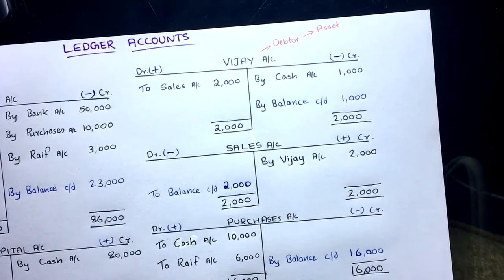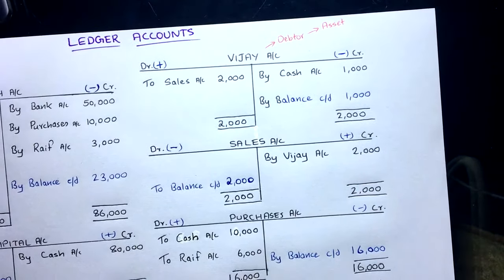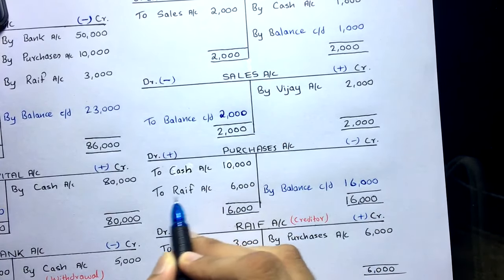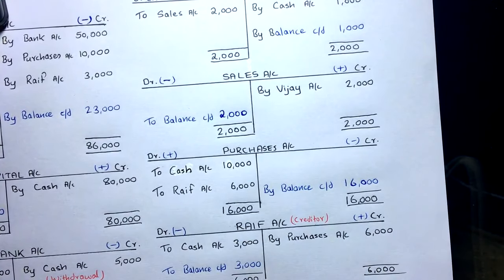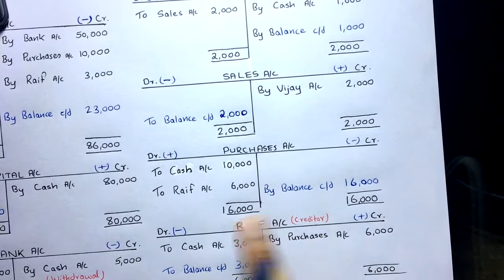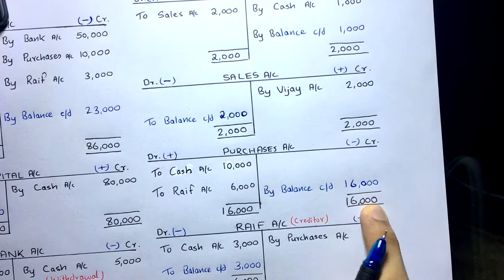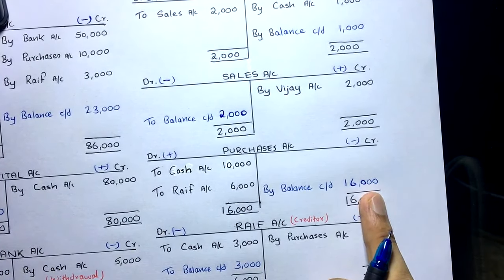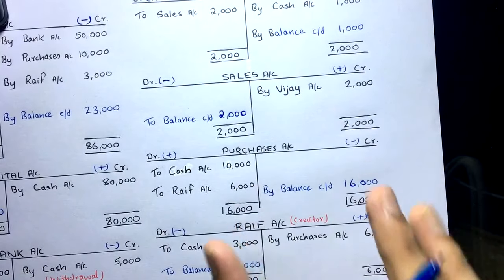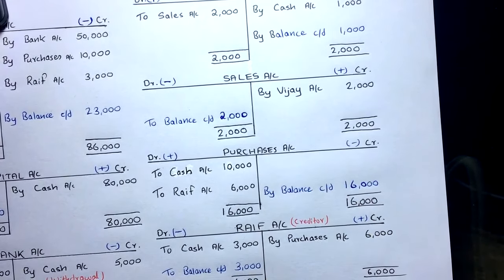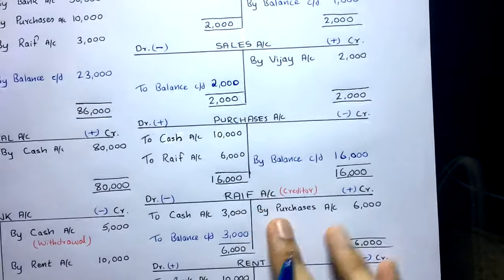For the Purchases Account: we made two purchases — one cash purchase of 10,000 and one credit purchase from Rife of 6,000. Total debit side is 16,000, nothing on the credit side. So write 16,000 on both sides, balance carried down 16,000. The interpretation: in this accounting period, total purchases were 16,000.